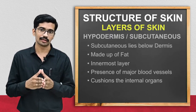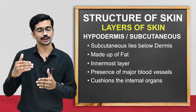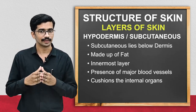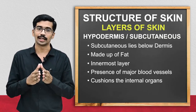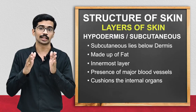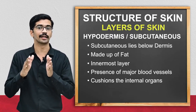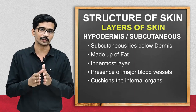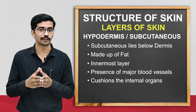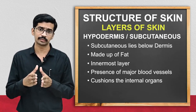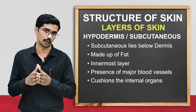The next layer is the hypodermis, seen just below the dermis. It is mainly made up of fatty tissue, which is why we term it the subcutaneous layer of the skin. It contains the major blood vessels. The main function of this layer is to act as a cushion for our internal organs, and it can also be termed the superficial fascia.